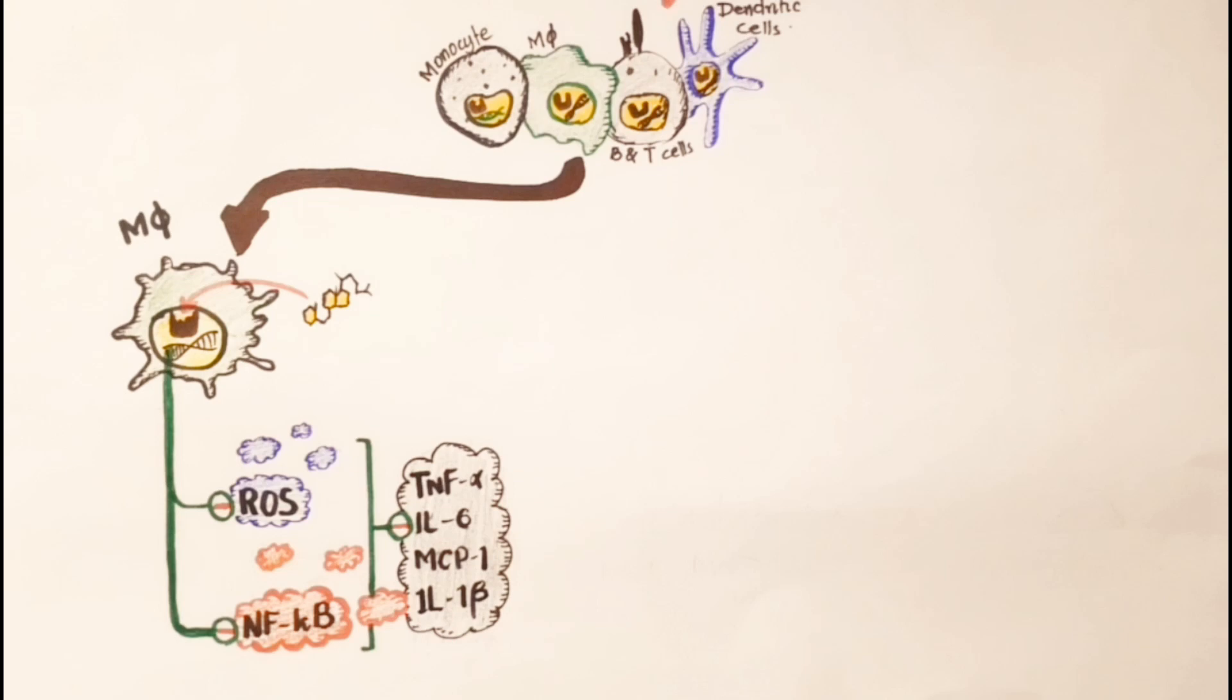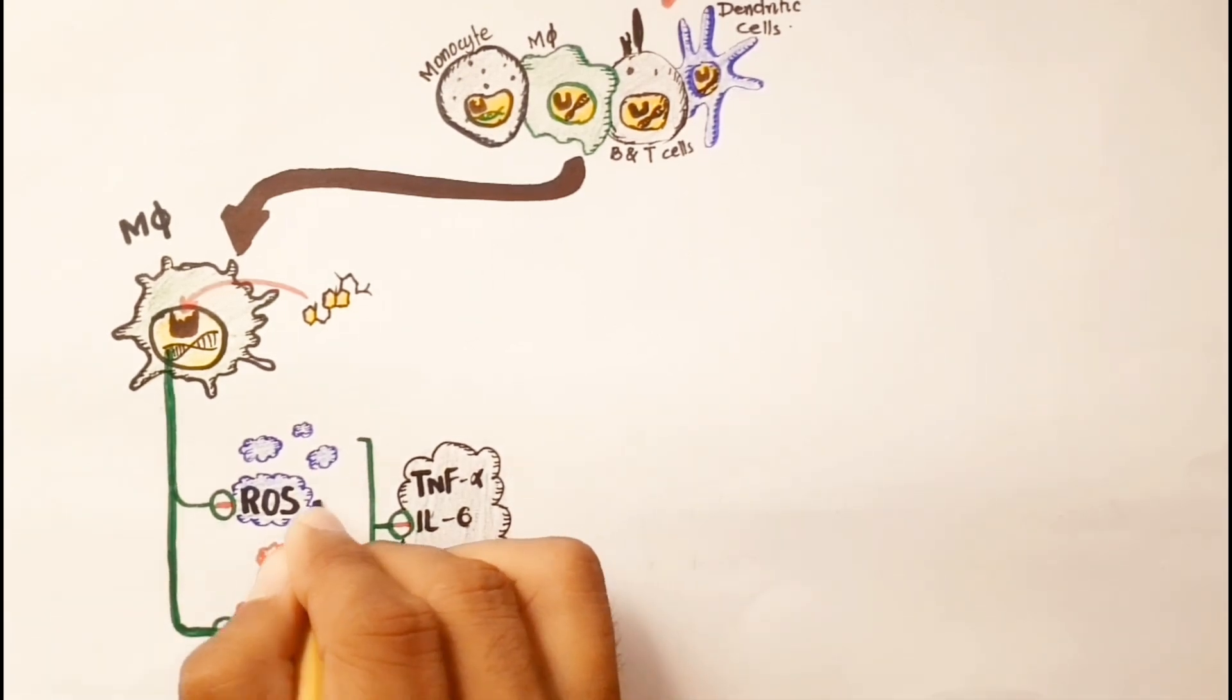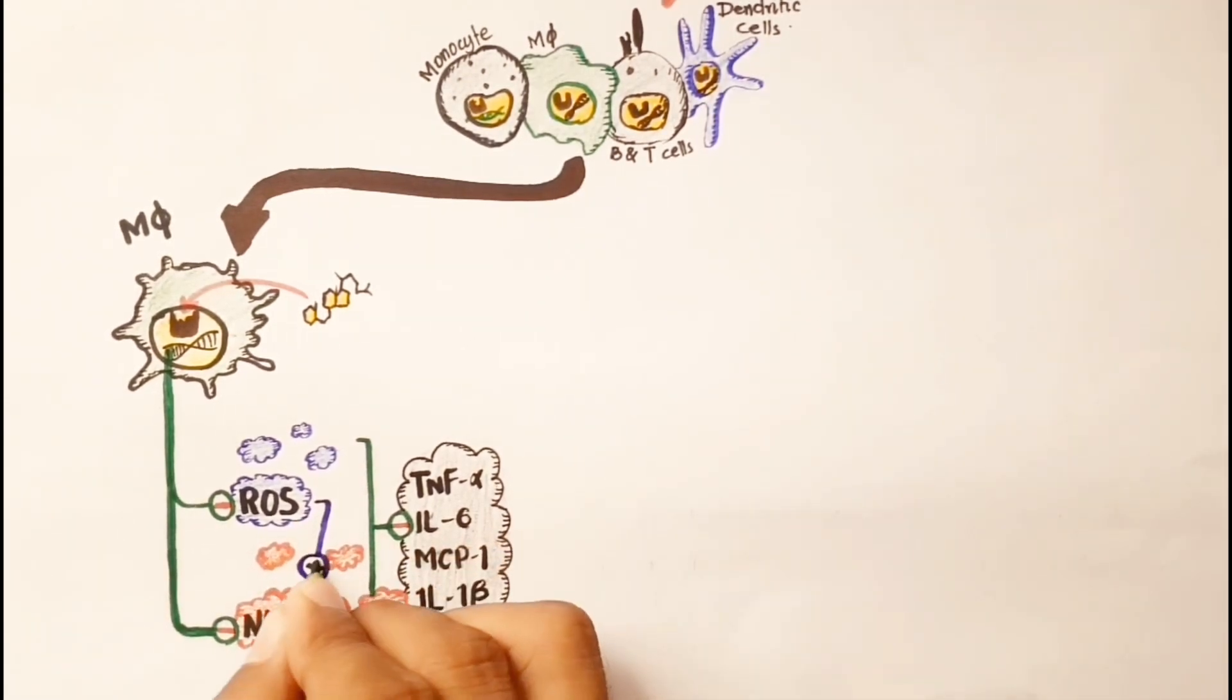Excess reactive oxygen species production can increase nuclear factor kappa B expression in immune cells, leading to excess secretion of pro-inflammatory cytokines, which was discussed in the first part of our lecture.